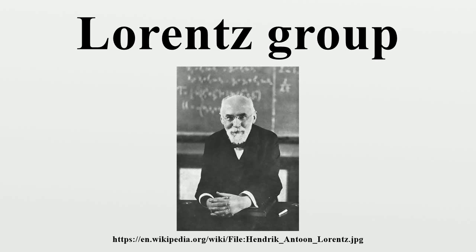This is one way to understand why the restricted Lorentz group is six-dimensional. The set of all rotations forms a Lie subgroup isomorphic to the ordinary rotation group SO. The set of all boosts, however, does not form a subgroup, since composing two boosts does not, in general, result in another boost. A boost in some direction, or a rotation about some axis, generates a one-parameter subgroup.